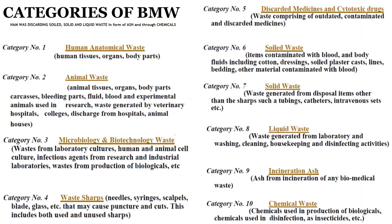Category 5 is discarded medicines — expired medicines and cytotoxic drugs. Category 6 is soiled waste — items contaminated with blood or body fluids such as cotton dressings, plaster casts, bedding, and linens. Category 7 is solid waste — disposal items other than sharps, such as tubing, catheters, and intravenous sets. Category 8 is liquid waste — generated from laboratories, washing, cleaning, housekeeping, and disinfecting activities.